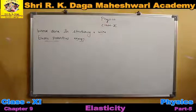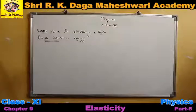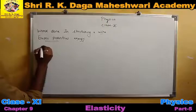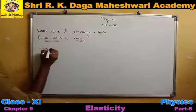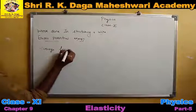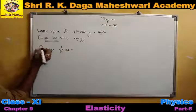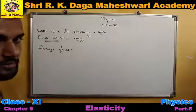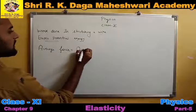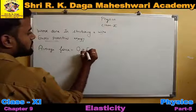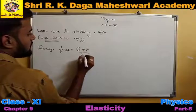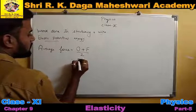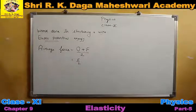Initially the deforming force was zero and the deforming force is increased. We need to find the average force. The wire starts in its original shape with no force applied, so the starting force was zero. After the force is applied, it is F. We take the average by dividing by 2, and we get the average force applied on the wire is F upon 2.